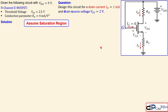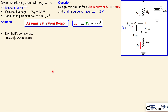We always begin by assuming the MOSFET is operating in the saturation region, where the current is constant. In saturation, the drain current equals kn times (VGS minus the threshold voltage) squared. We assume this and will verify it afterward.